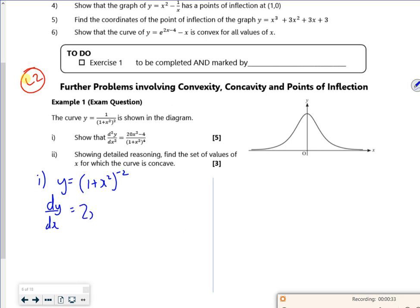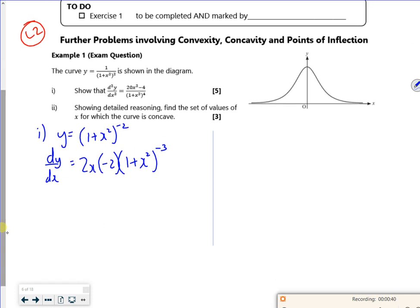So differentiate inside the brackets of 2x, bring down the power, multiply by the bracket to the power minus one. So I'll tidy that up. That's what I get.